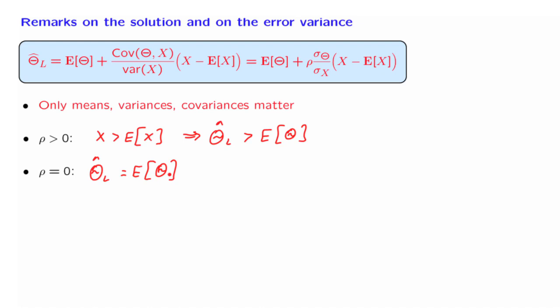Essentially, what's happening is that a linear estimator exploits the correlation between the two random variables to come up with an estimate. But if the two random variables are uncorrelated, then it's nothing that it can do. And it does not give us anything useful. It just reports back the expected value of theta.